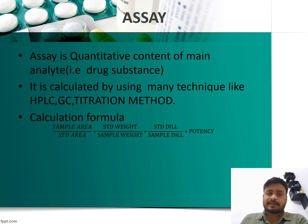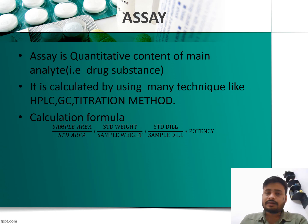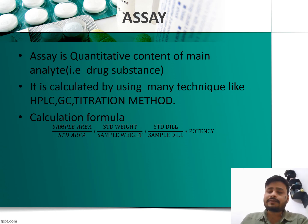The assay formula is: (Sample Area / Standard Area) × (Standard Weight / Sample Weight) × (Standard Dilution / Sample Dilution) × Potency. Using this formula, you calculate the assay of a drug substance or drug product.